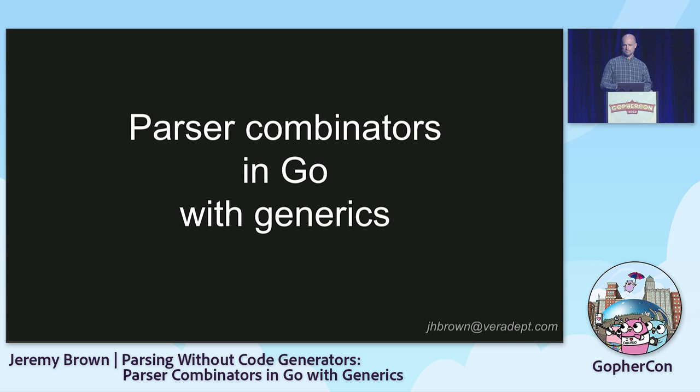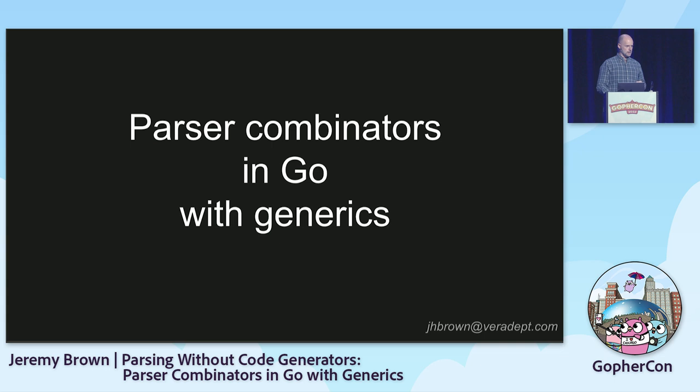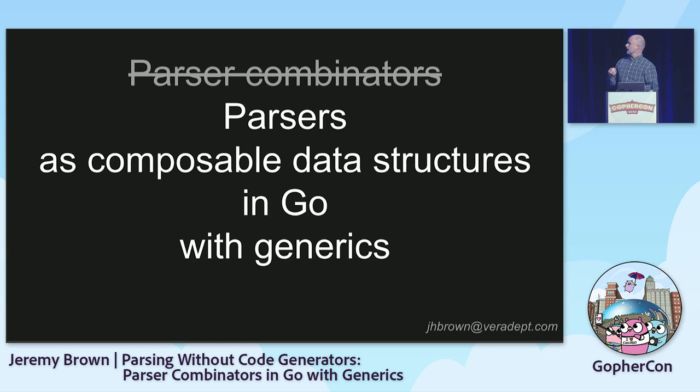I hope you enjoy this talk — it's a bit of a speed run. I'm going to talk about using parser combinators to make parsers, and how generics make parser combinators really nice in Go. In reverse order, I'm going to show you what they are, how to implement them, and how to use them. And I'm going to try not to say 'parser combinators' for the next 30 or 35 minutes, because it also does not roll off the tongue. Better: parsers as composable data structures in Go with generics.